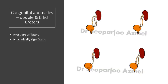First, we go for congenital anomalies. Number one is the double and bifid ureter. Usually a double or bifid ureter has no clinical significance because the patient can live life as it is — there won't be any symptoms, signs, or problems. It usually occurs mostly unilateral, meaning one side of the genitourinary system.